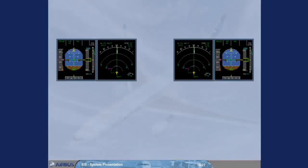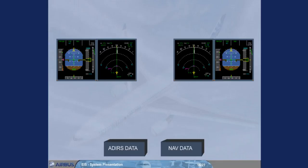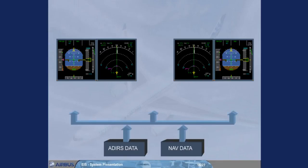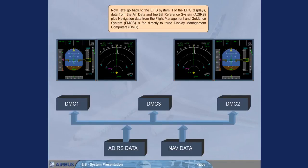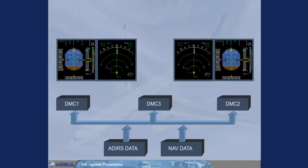Let's go back to the EFIS system. For the EFIS displays, data from the Air Data and Inertial Reference System, ADIRS, plus navigation data from the Flight Management and Guidance System, FMGS, is fed directly to three Display Management Computers, DMC. The three identical DMCs process the data and generate the images to be displayed. Under normal circumstances, DMC1 supplies EFIS information to the Captain's PFD and ND, DMC2 supplies the First Officer's PFD and ND, and DMC3 is available as a backup.